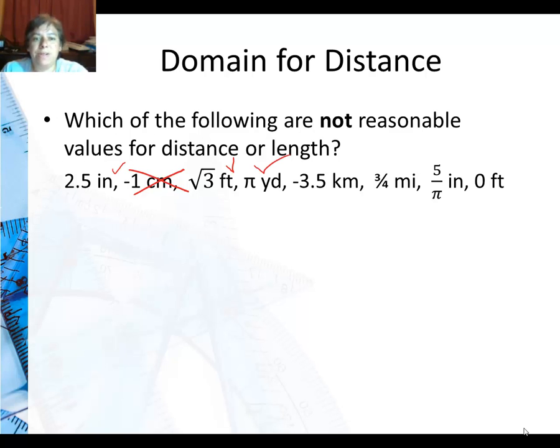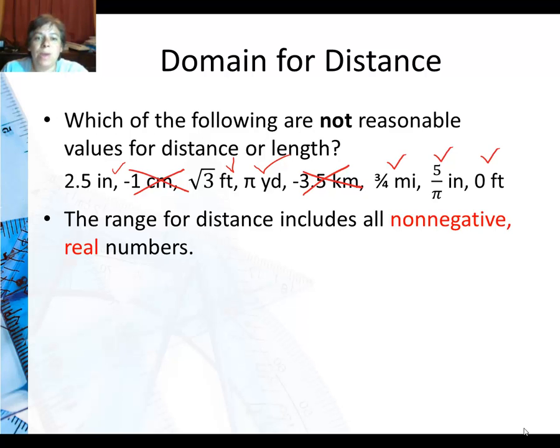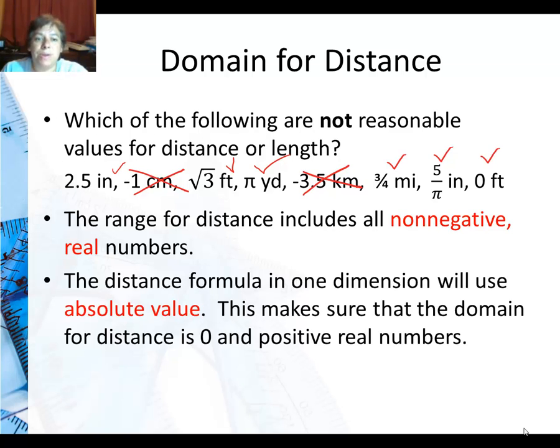Negative 3.5 kilometers? Not allowed. No negative distances. And 3 fourths of a mile? Sure. Even 5 divided by pi and even 0 feet are fine, as long as we don't get negatives. So the range, or domain depending how you're talking about it, for distance includes all non-negative real numbers.